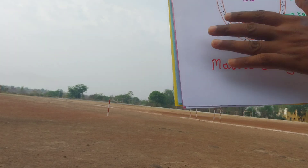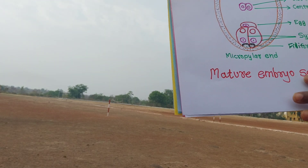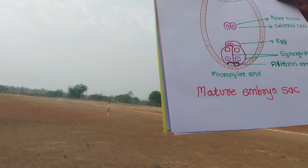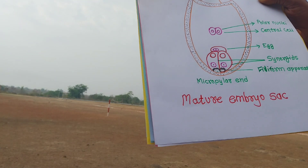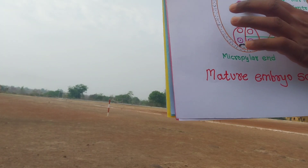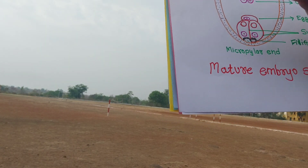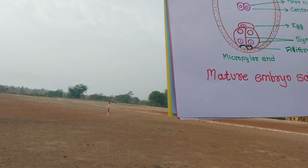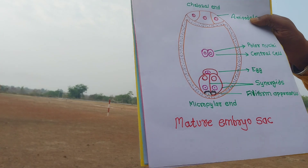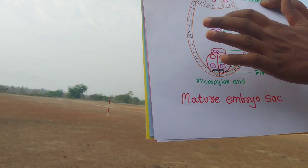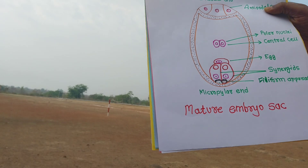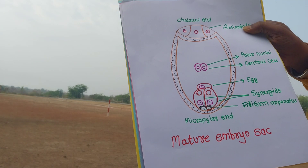In this video we have seen the embryo sac. I will ask you: what is the total number of cells and nuclei in the embryo sac? The total number of nuclei is 8 — counting 1, 2, 3, 4, 5, 6, 7, 8. And the total number of cells is 7, because the central cell has two nuclei but counts as one cell.